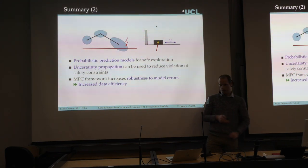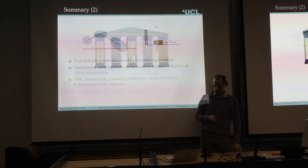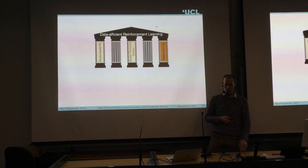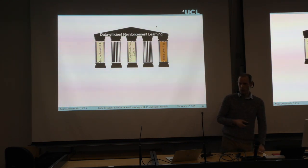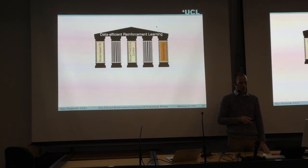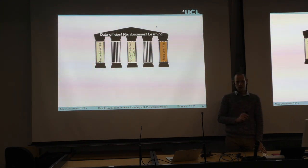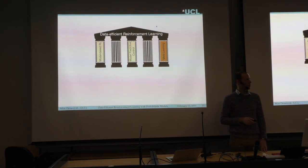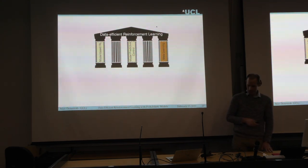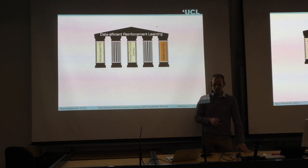To summarize this part: I wanted to motivate probabilistic models for safe exploration in RL, and the uncertainty propagation can be used to reduce violation of safety constraints. The MPC framework increases robustness to model errors and gives increased data efficiency compared to non-MPC-based approaches. I'll stop here and skip the meta-learning part — I'll upload the slides so you can have a look. Thank you for your attention and for coming so late.